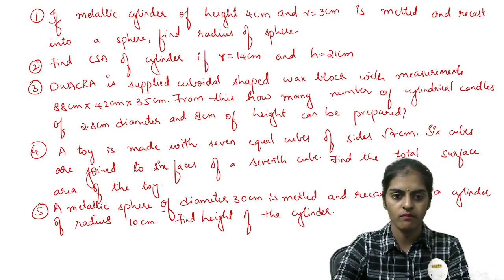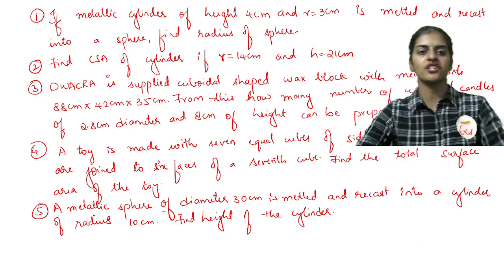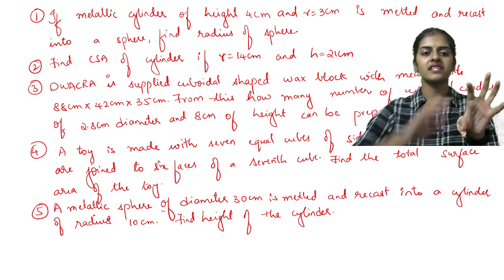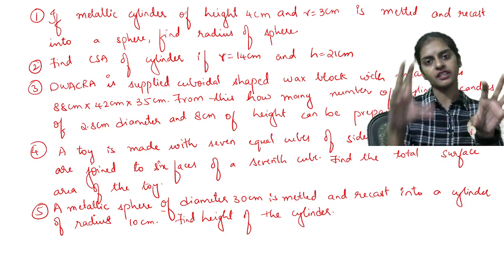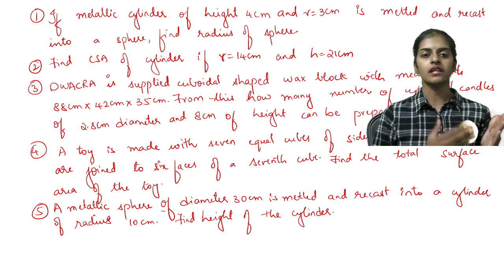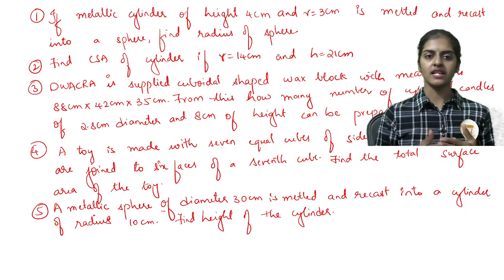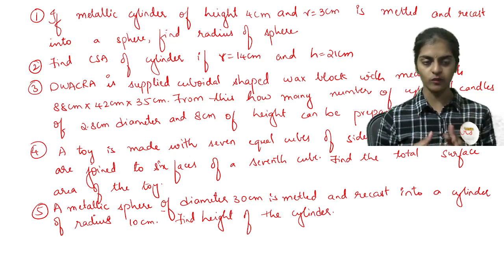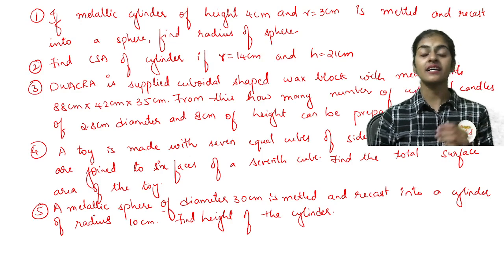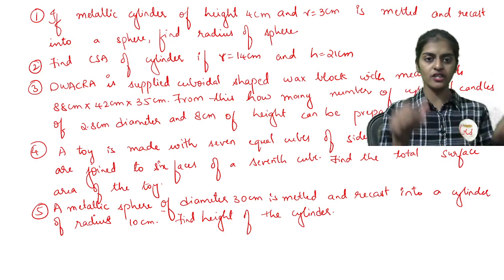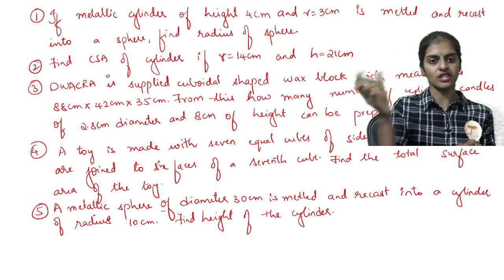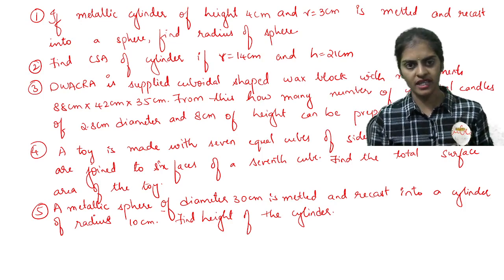In question number five, you can see a metallic sphere of diameter 30 centimeter. This sphere is melted and recast into a cylinder. Sphere is converted into cylinder. Simple volume of sphere equals volume of cylinder. If you see, most of your questions are from conversion of one shape to another. Direct question if they ask you CSA of a cone or cylinder, they will give you the dimensions, you have to simply substitute and find. They may ask you a big shape is converted into small shapes. So volume of the bigger shape equals n times volume of the smaller shape, where n is the number of small shapes you are getting. So that's the general formula.